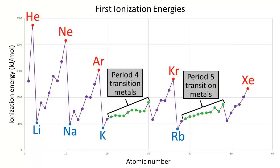Let's take a look at the first ionization energies for the first 54 elements in the periodic table. Notice the pattern: the first ionization energy generally tends to climb up slowly as the atomic number increases, starting with lithium and reaching a peak at neon. Then all of a sudden, the first ionization energy drops dramatically at sodium, and the pattern repeats itself.